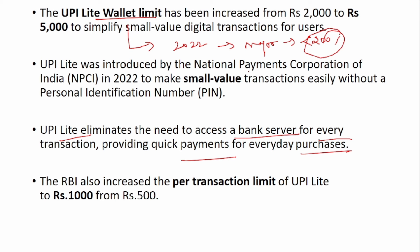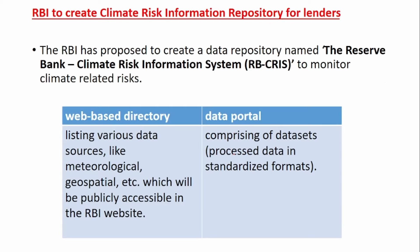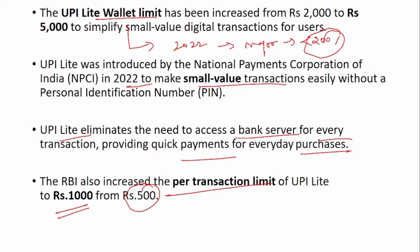UPI Light was introduced by NPCI in 2022 to enable small-value transactions. RBI increased the per-transaction limit from Rs. 500 to Rs. 1,000. Also, the UPI Light wallet limit has been increased from Rs. 2,000 to Rs. 5,000. Previously, you could upload money only up to Rs. 2,000, but now it has been increased to Rs. 5,000 and the per-transaction limit has also been increased from Rs. 500 to Rs. 1,000.